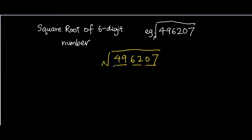So what are the steps to solve this kind of problem? I'm going to teach you a very simple way. Let's say you are given the example 496207 and you want to find the square root of it. The first thing you have to do is split this 6-digit number into 3 pairs of 2-digit numbers — in this case that would be 49, 62, and 07.